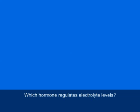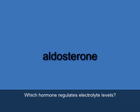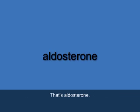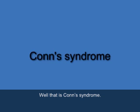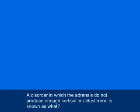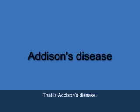Which hormone regulates electrolyte levels? That's aldosterone (A-L-D-O-S-T-E-R-O-N-E). What is the term for a condition caused by aldosteronism? That's Conn's syndrome (C-O-N-N'S syndrome). A disorder in which the adrenals do not produce enough cortisol or aldosterone is known as what? That's Addison's disease (A-D-D-I-S-O-N'S disease).